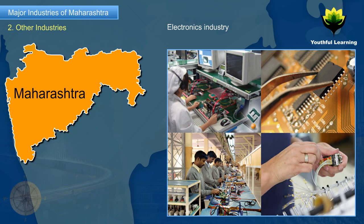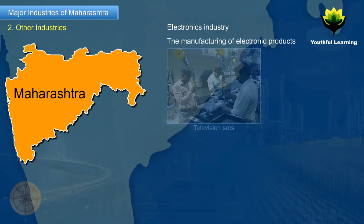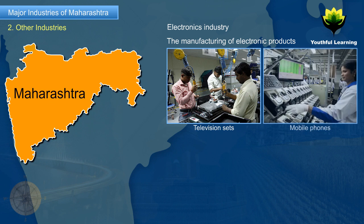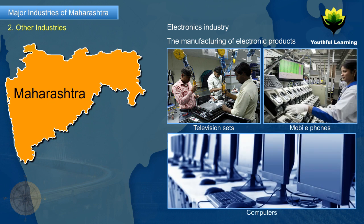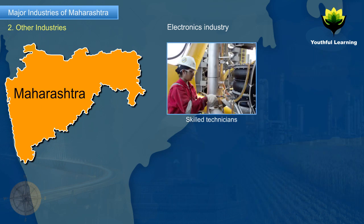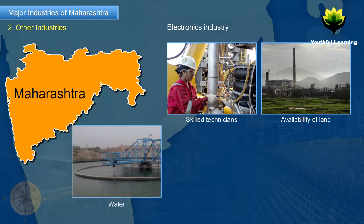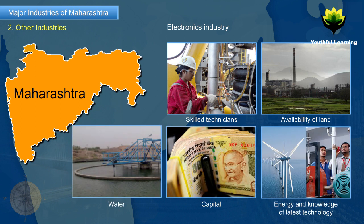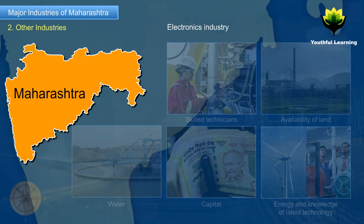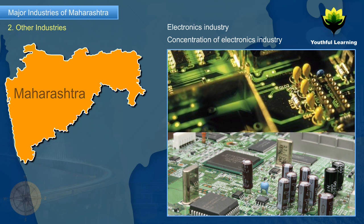Electronics Industry: The electronics industry involves the manufacturing of electronic products such as television sets, mobile phones, and computers. It requires skilled technicians, availability of land, water, capital, energy, and knowledge of the latest technology. The industry is concentrated in Mumbai, Pune, Nagpur, Nasik, and Aurangabad.